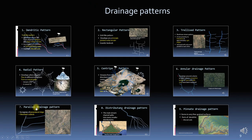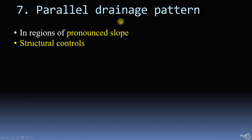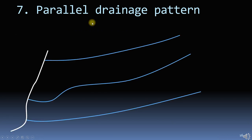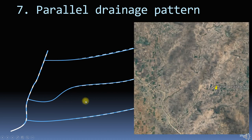The seventh pattern is the parallel pattern. Tributaries run parallel to each other and meet the mainstream. There is a pronounced slope and a structural control which controls the spacing between the tributaries.